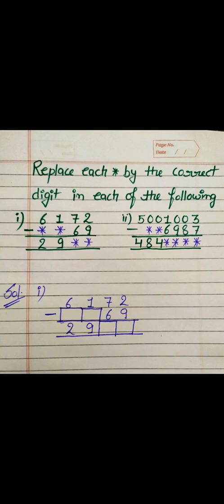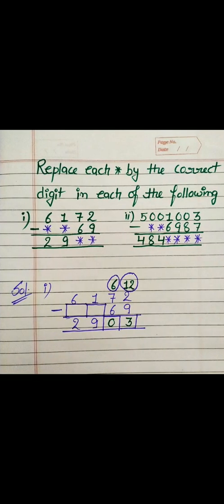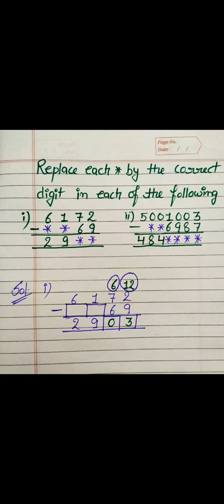As you are seeing, we start the subtraction from the ones place. At the ones place it is 2 and 9, and we have to subtract 2 from 9 but we can't. So this 2 will take borrow, becoming 12, and this 7 will become 6. After subtracting 9 from 12 we get 3, and 6 minus 6 is 0.